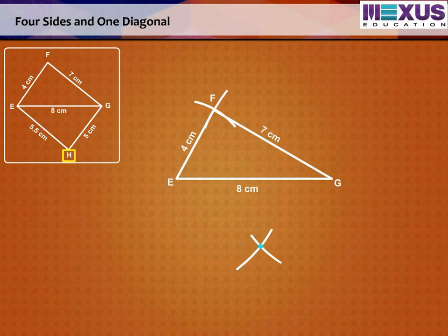We know that H would be the point of intersection of the two arcs, as H should lie on both the arcs drawn. So, mark it as H, and join EH and GH to form a quadrilateral.